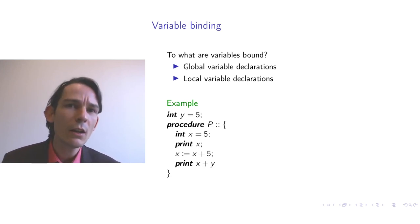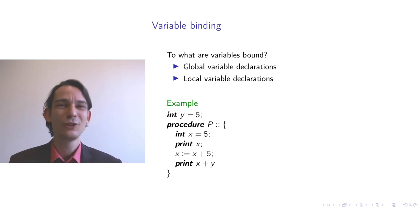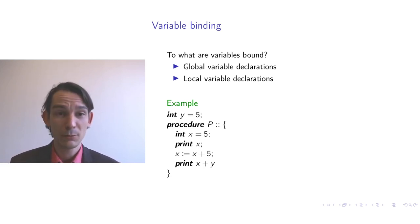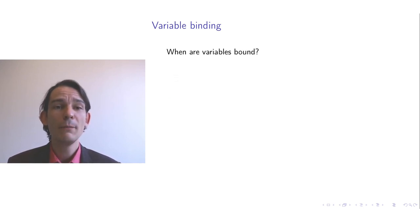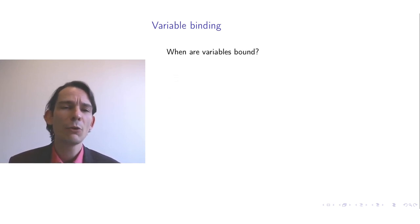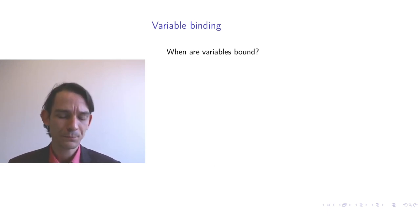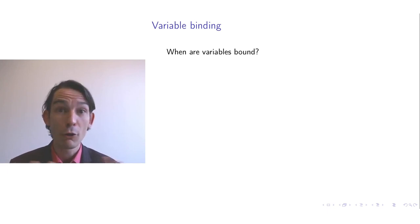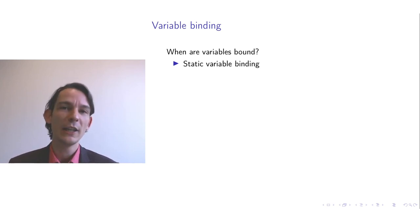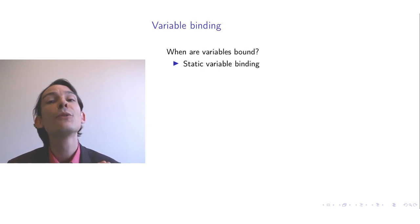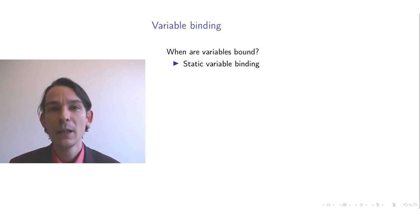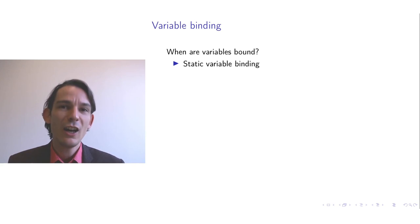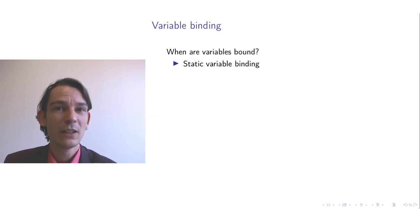There are intricate but interesting notions when talking about variables. One is the question of when variables are bound. What I just showed — binding based on the program text — can all happen before running the program. This is called static variable binding: it is called static because all variable occurrences are known to be bound to a particular variable declaration even before the program executes.